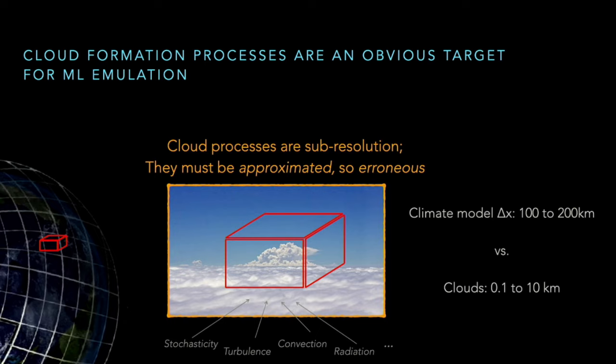The obvious target is cloud processes, because it's really well known that cloud calculation in the current climate model is the number one source of model errors. To begin with, cloud entails a really complicated set of physics including turbulence, convection, radiation, and phase change of water.